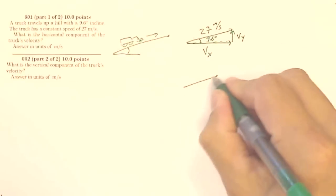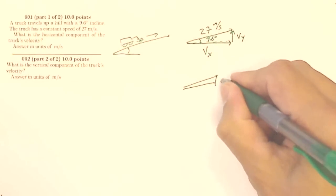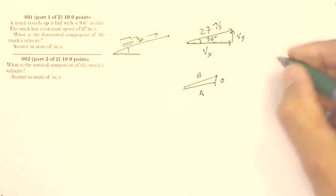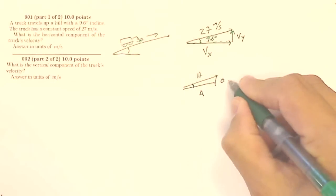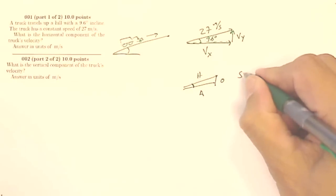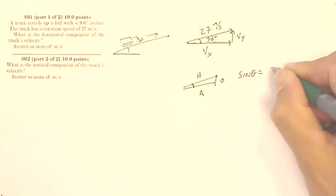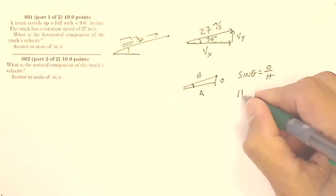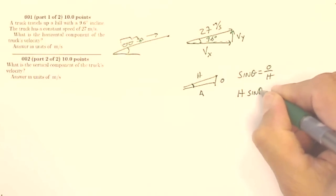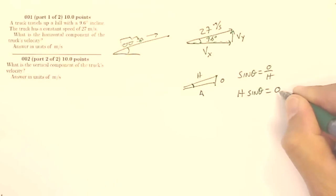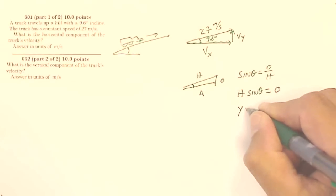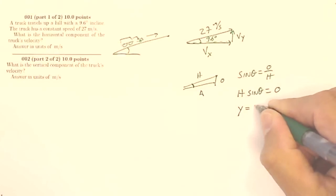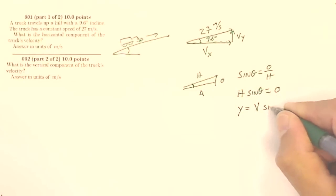Whenever I've got a triangle, I know that I've got an opposite side, I've got an adjacent side, I've got a hypotenuse. And if this is my theta, that's my opposite. I know that the sine of theta is going to be my opposite over my hypotenuse. So my hypotenuse times the sine of theta is going to give me my opposite side. My opposite side is my y, so my y value is going to be my hypotenuse — in this case my velocity — times the sine of theta.